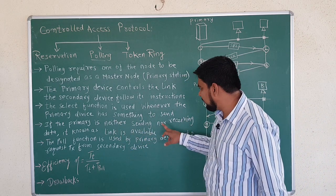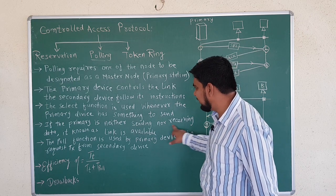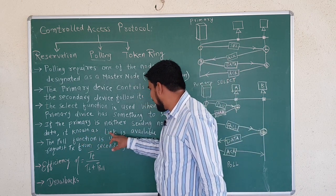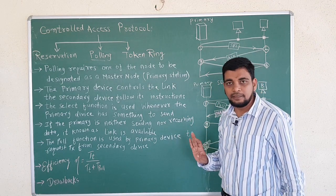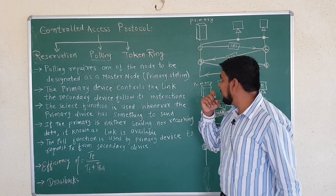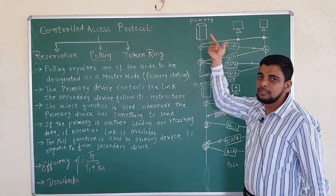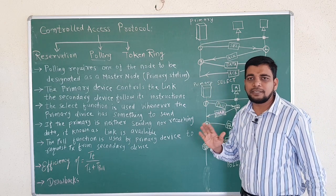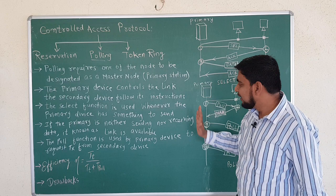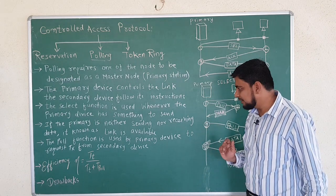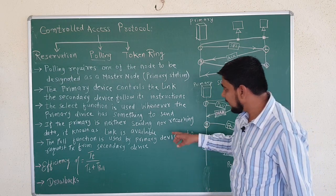If the primary device is neither sending nor receiving data, it is known as the link being available. This means if the master node is neither transmitting nor receiving, the link is available.